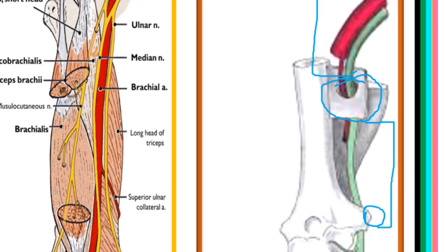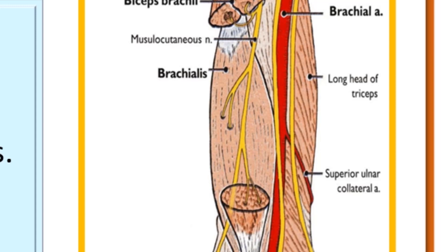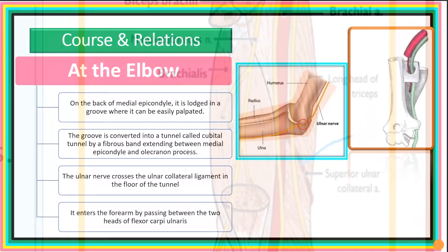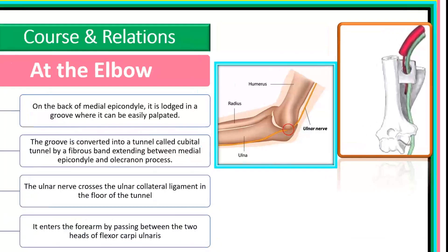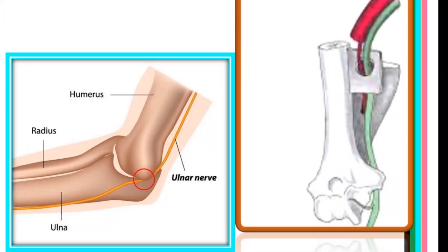At the lower arm, the nerve is also joined by the ulnar collateral nerve, a branch of the radial nerve, and is accompanied by the superior ulnar collateral artery. At the elbow, the nerve lies in a groove behind the medial epicondyle where it can easily be palpated. This groove is converted into a tunnel called the cubital tunnel. The nerve then crosses the ulnar collateral ligament and enters the forearm by passing between the two heads of flexor carpi ulnaris.